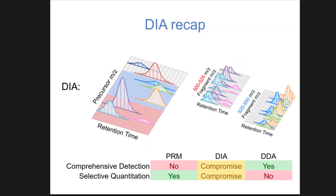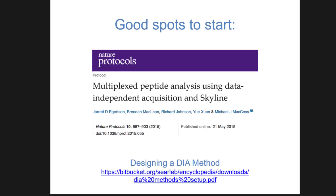So yesterday we talked about how DIA was a compromise between PRM and DDA from the standpoint of getting targeted-like quantitation yet still being as comprehensive as DDA is to measure an entire proteome. To start this off, it's actually probably worthwhile showing you this reference by Jared Egertson on designing a DIA method. This protocol is a very good place to start using DIA with Skyline specifically. It's from 2015 and starting to get a little dated, but conceptually a lot of the right ideas are embedded in this.